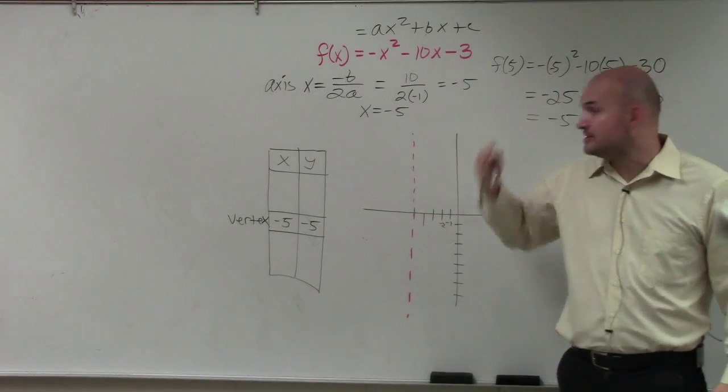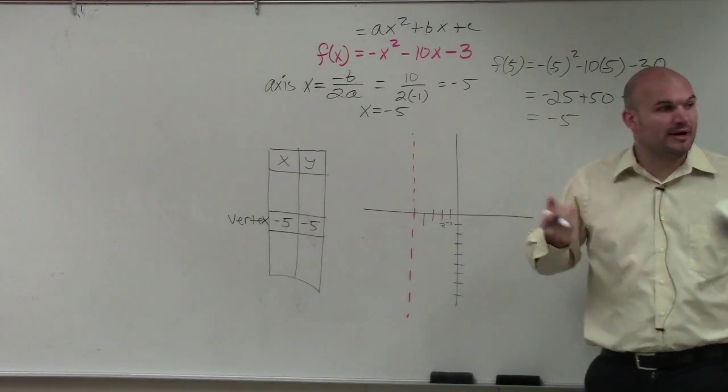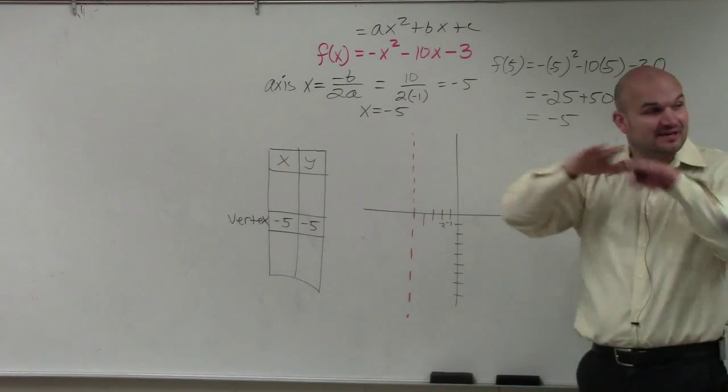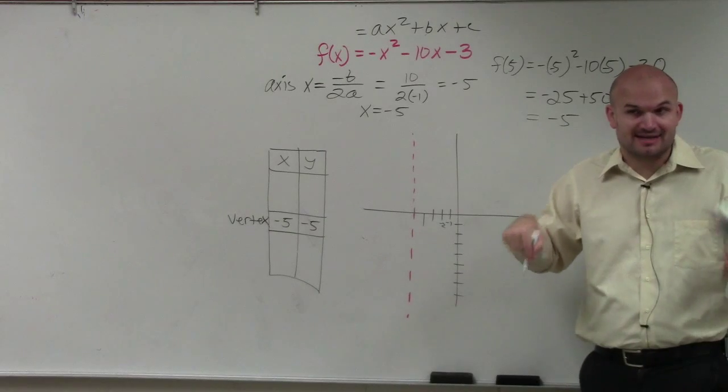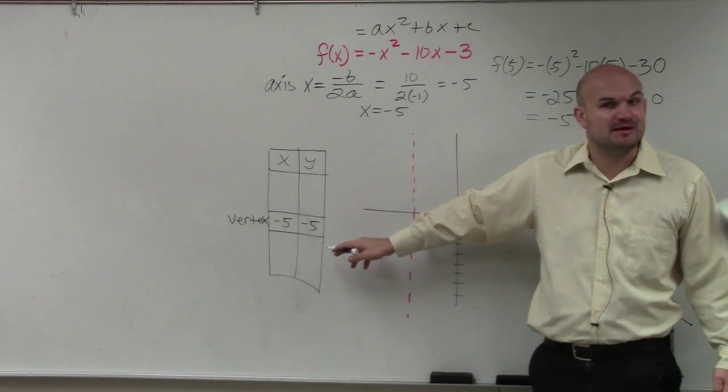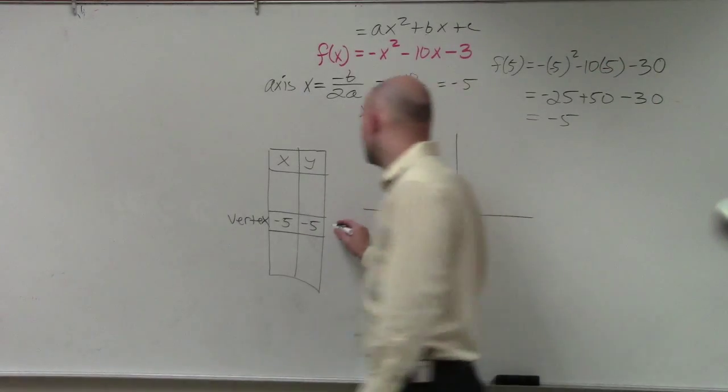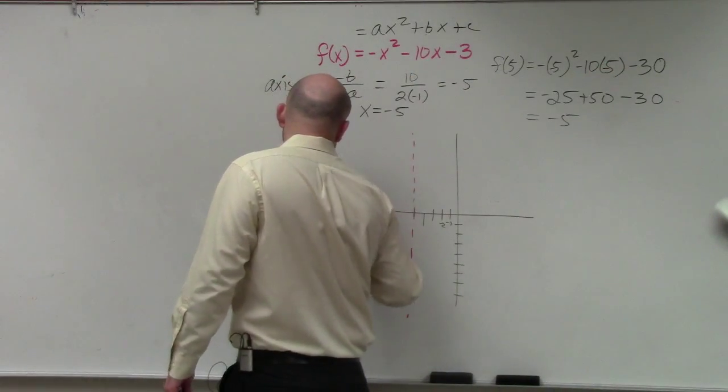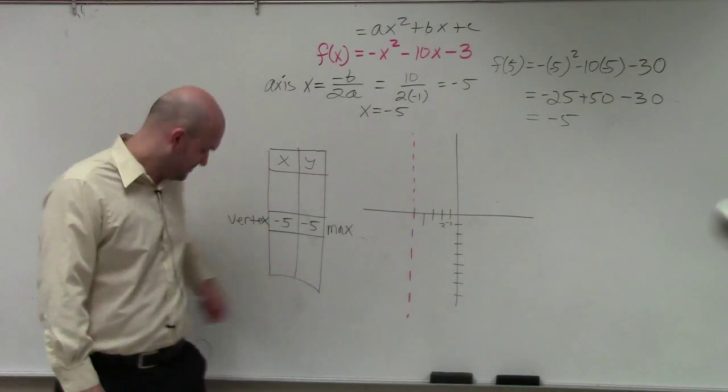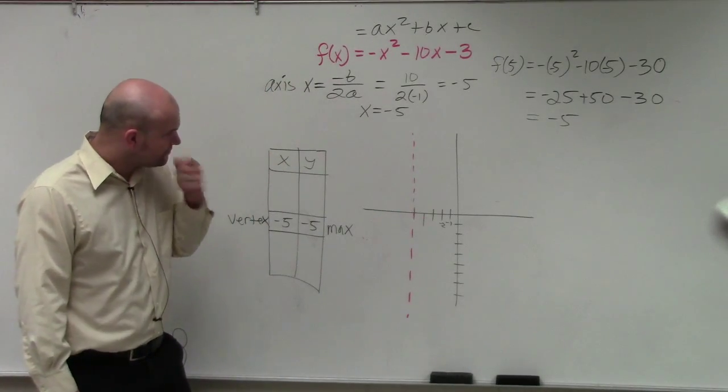Now let's just look by inspection. Do we know, is this graph going to open up or open down? Down, because it's negative. So we know the graph is being reflected about the x-axis. So the graph opens down. Therefore, if the graph opens down, is this vertex going to be a max or a min? Max. So we can just help each other out. You didn't have to write. I don't think they asked for that, but just to practice.